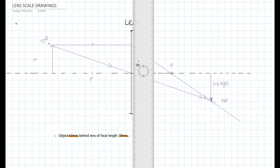So the object is two squares big, 20 millimeters big and the image is also 20 millimeters big.